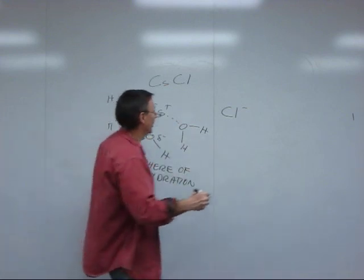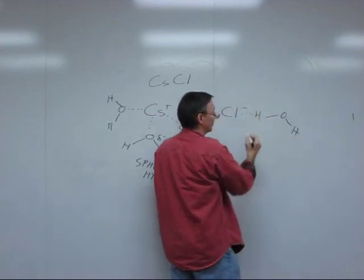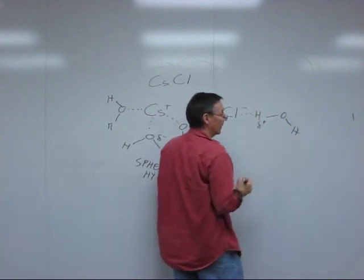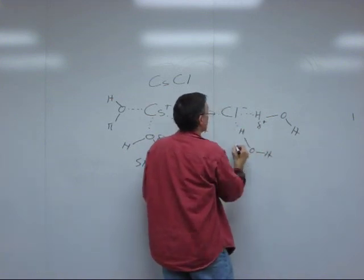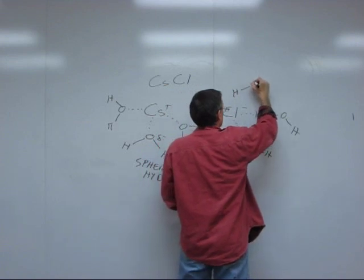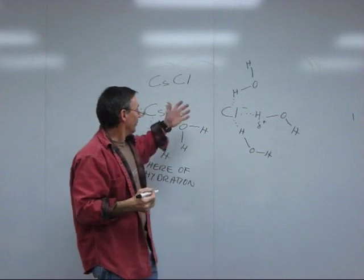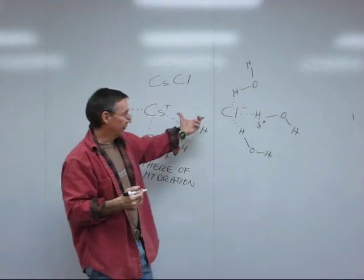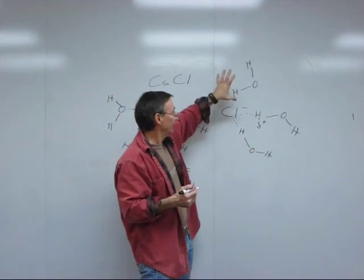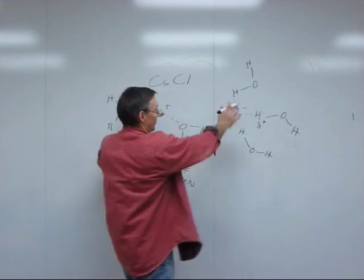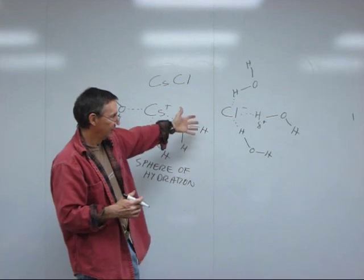The same thing is happening to the chloride ions, but the chloride ions have water molecules oriented so that the partial positive charges of the hydrogens would be toward the chloride. So even though the cesium and chloride ions are strongly attracted to each other, there are so many of these polar water molecules around that the attraction of the polar water molecules overcomes the binding of the cesium and the chloride, separates them, and so they're hydrated like this in solution.